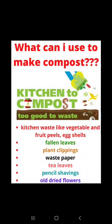Then: fallen leaves — plants ke patte jo jharh kar gir jaate hain, gire hue patte — you can collect those. Then plant clippings — when you trim plants, a lot of waste accumulates: small branches, twigs — all of these can be used to make compost. Waste paper — you use a lot of paper and throw it in the dustbin; this paper can be recycled to make compost. Tea leaves — after making chai, the leftover tea leaves which we throw away can be used to make compost. Pencil shavings — the waste from sharpening pencils, when they dry out, can also be used to make compost.